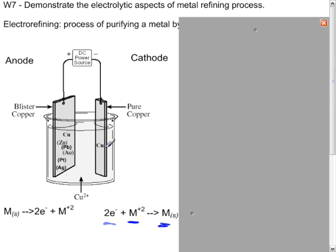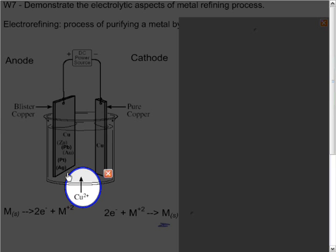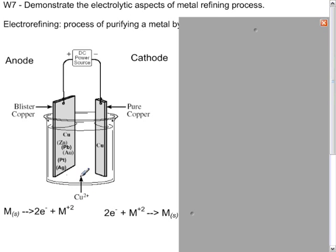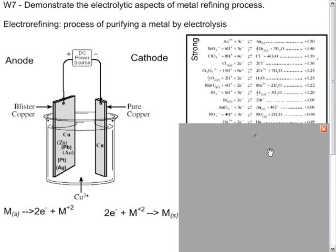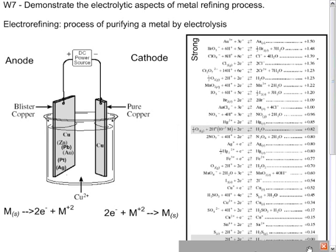But how can we be sure that this is all going to be copper? Well first of all, we've made this solution copper plus 2, so we've set that up so that this is a copper solution. Now let's check with our table of reduction potentials.